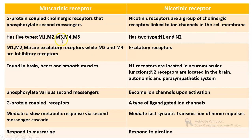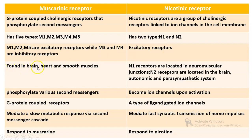Muscarinic receptors have five types: M1, M2, M3, M4, and M5, while nicotinic receptors have two types: N1 and N2. Muscarinic receptors M1, M2, and M5 are excitatory receptors, while M3 and M4 are inhibitory receptors.